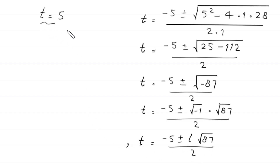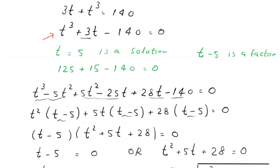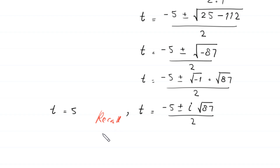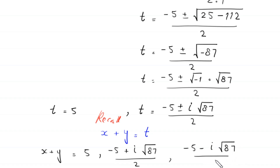Recalling that we set x plus y equal to t, we now have three solutions: x plus y equals 5, x plus y equals negative 5 plus i times square root of 87 over 2, and x plus y equals negative 5 minus i times square root of 87 over 2.